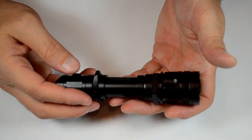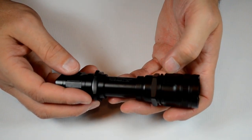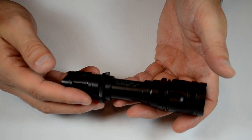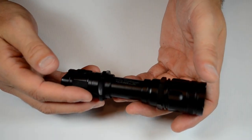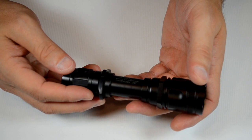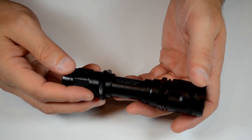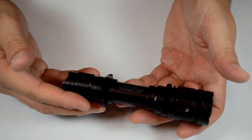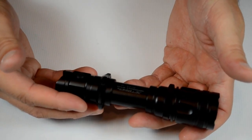This light puts out 408 lumens at high for two hours and 15 minutes on an 18650. It's got four modes: 408, 160, 45, and a low of eight lumens, which provides you with 273 hours of runtime. These are all ANSI ratings.